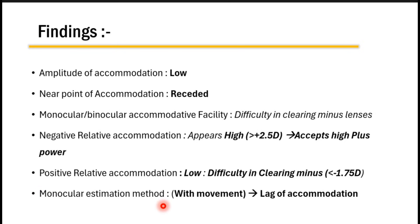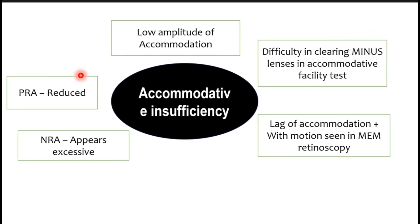In the monocular estimation method (MEM), since accommodation is reduced, you will see a with-motion movement indicating lag of accommodation. To summarize the test results in accommodative insufficiency: low amplitude of accommodation, difficulty clearing minus lenses in accommodative facility test, lag of accommodation with-motion seen in MEM retinoscopy, reduced PRA, and apparently excessive NRA.